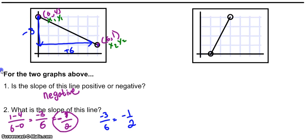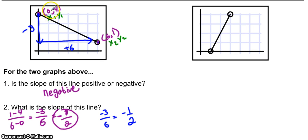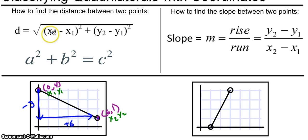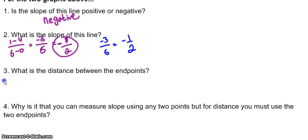So, distance formula, we would have to take these points right here, 0, 4, 6, and 1, and plug them into this formula right here. The square root of the whole thing, x2 minus x1 squared plus y2 minus y1 squared. So let's just try that out really quickly.